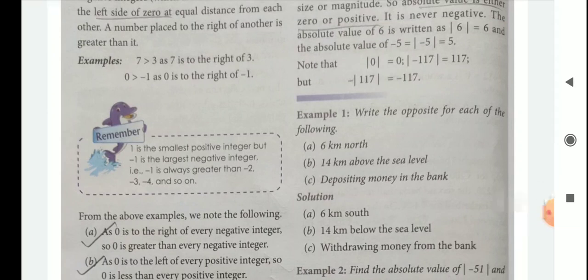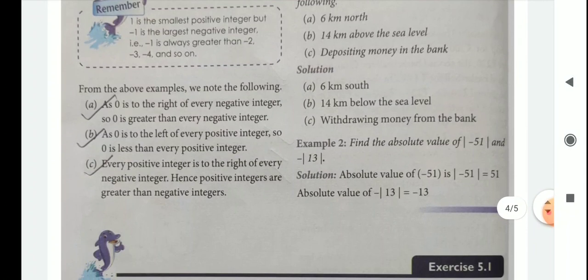Example 1: Write the opposite for each of the following. 6 km north — north's opposite is south. 14 km above the sea level — above's opposite is below. Depositing money in the bank — depositing's opposite is withdrawing. Example 2: Find the absolute value of minus 51 and minus 13. The absolute value of minus 51 is 51, and the absolute value of minus 13 is 13.